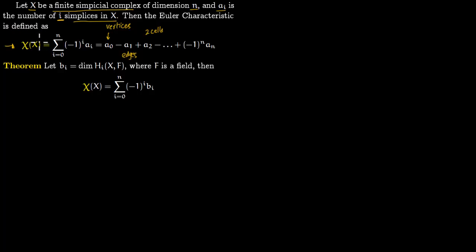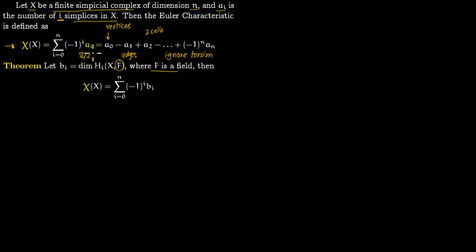This definition is not as useful for doing computations, so to make it more applicable we have to recast it. Let b_i be the dimension of H_i, the homology group, where you take coefficients in a field. This is important because taking coefficients in a field allows you to ignore torsion. So if the homology groups are something like Z mod 2Z, you ignore them. Then the Euler characteristic becomes the summation of (-1)^i * b_i, where instead of a_i we have b_i, which is just the dimension of H_i.